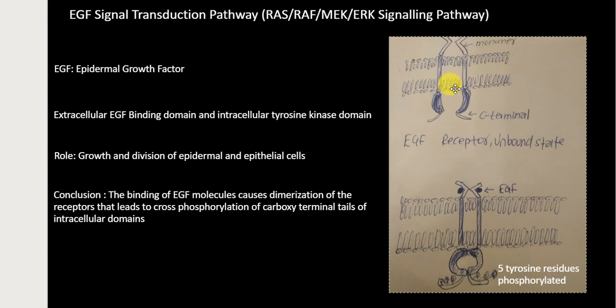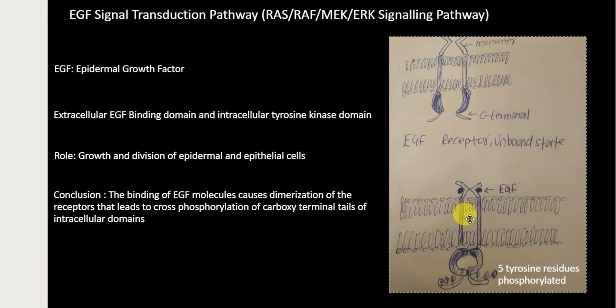When two EZF molecules bind at the EZF binding sites on the receptor, a conformational change in the EZF receptor occurs. The arms of the monomeric units attach with each other extracellularly, and the same thing happens inside the cell — they attach with each other. This process is called dimerization: from two identical separated monomers, they become one dimer that is attached and not separated.